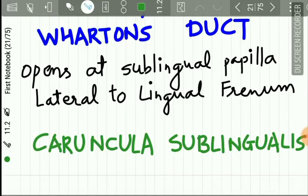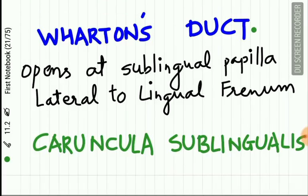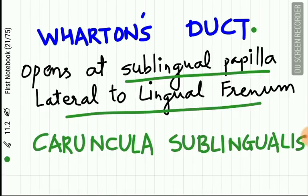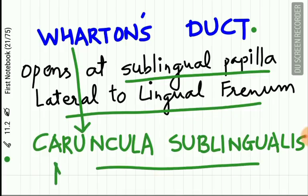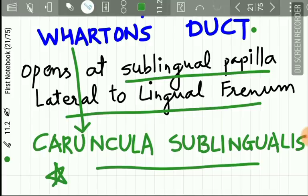The excretory duct of the submandibular gland is called Wharton's duct. It opens at the sublingual papilla lateral to the lingual frenum. The opening of Wharton's duct is called the caruncula sublingualis — important terminology to remember.